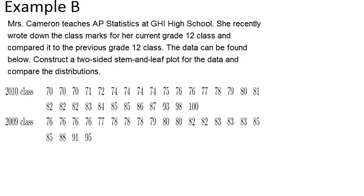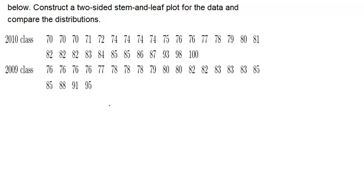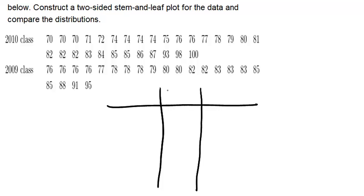Now Example B. Mrs. Cameron teaches AP statistics at GHI High School. She recently wrote down the class marks for her current grade 12 class and compared them to the previous grade 12 class. Construct a two-sided stem and leaf plot for the data and compare the distributions. We'll do something similar to before, constructing a back-to-back stem and leaf plot with the stems in the middle, the 2010 class on the right, and the 2009 class on the left.